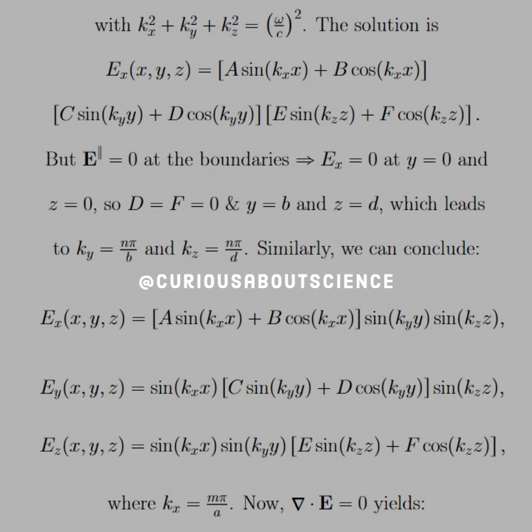Similarly, we can conclude for the other two components by analogy that we have EX, EY, EZ, except that in the X direction A and B need to be found, in the Y direction we have C and D that need to be found, and in the Z direction we have E and F that need to be found. Again, all by analogy here KX is just equal to N pi over A just to keep up with the notational consistency.